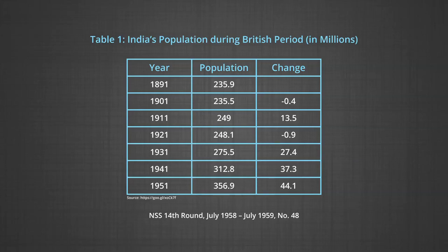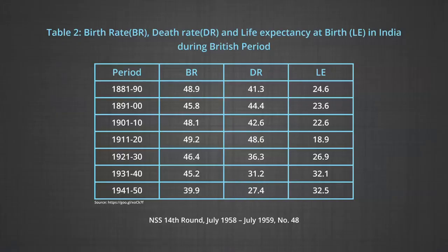Subsequently, every 10 years such census operations were carried out. It can be easily verified that between 1881 to 1921, India was in the first stage of demographic transition. During this period, the growth of population was negligible as both birth and death rates were very high and close to each other.